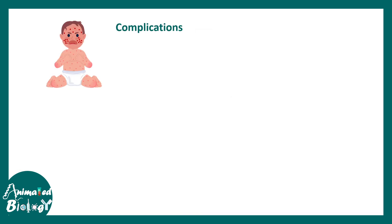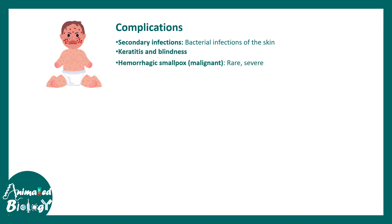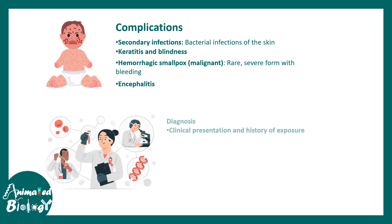Complications may include secondary bacterial infection, keratitis, and blindness. Hemorrhagic smallpox is rare but can cause a severe form of bleeding. Encephalitis is extremely rare, but in some cases the brain parenchyma can become inflamed. Diagnosis can be done through normal clinical investigation, and laboratory tests like polymerase chain reaction (PCR) are confirmatory for viral infection.